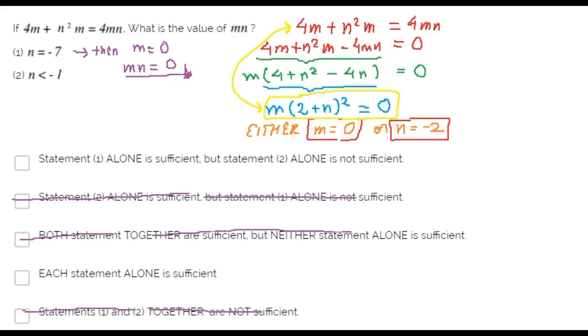n is less than negative 1. It means that n can be either negative 2, negative 3, negative 4, etc.